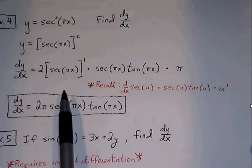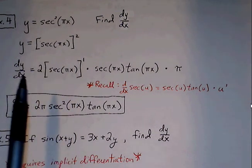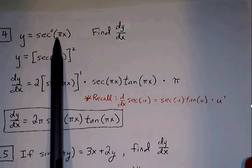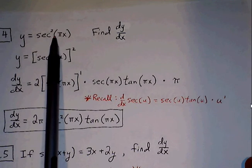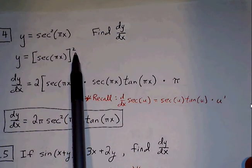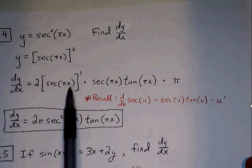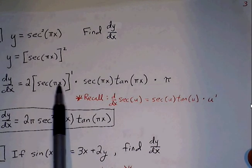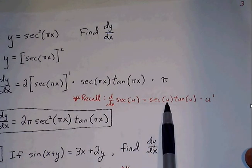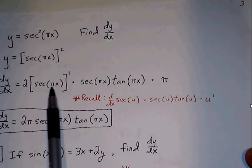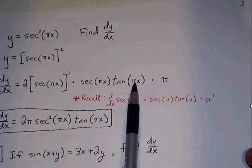We want to find the derivative of secant squared of pi x. We rewrite our function — anytime you see a squared, it's helpful to bring it outside a bracket so you can see that this is the outermost function to deal with first in chain rule. Bring down the 2, keep the parentheses, subtract 1 from the exponent going through power rule for the outermost function. Now we move to the inner function, which is secant of u. The derivative of secant of u is secant of u times tangent of u times u prime. The u value here is pi x.